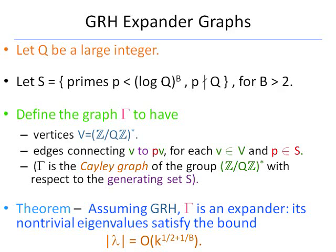Other properties from number theory, like the Ramanujan conjectures, have been used before. This is a different analytic direction. The graph that we use involves the vertices of Z mod QZ star for a large parameter Q, and it connects two points if they differ multiplicatively by a small prime. We show under GRH that this graph is an expander.